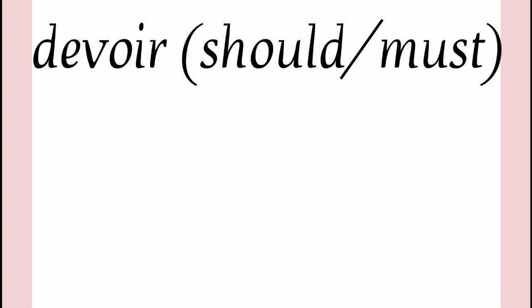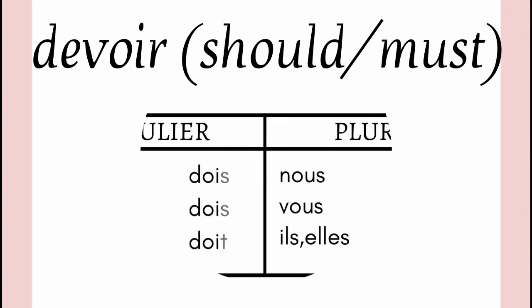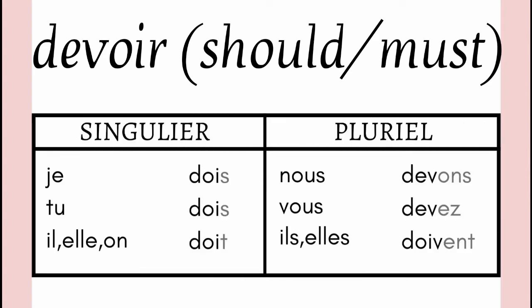The next verb we are going to cover is DEVOIR. DEVOIR means should or must, or it shows the ability of doing something. So how this verb is conjugated is as follows: je dois, tu dois, il doit, elle doit, nous devons, vous devez, ils doivent, elles doivent.